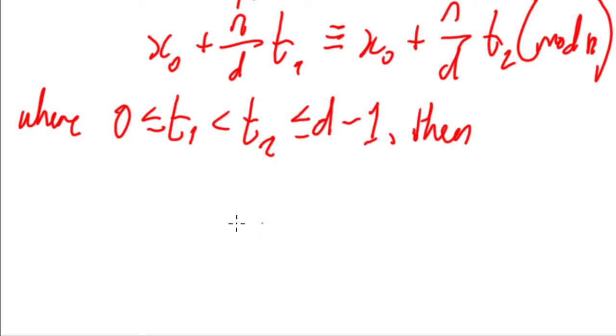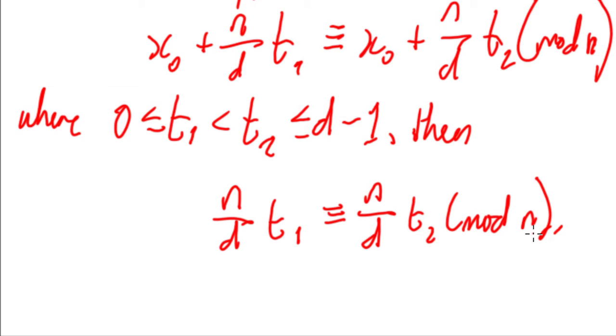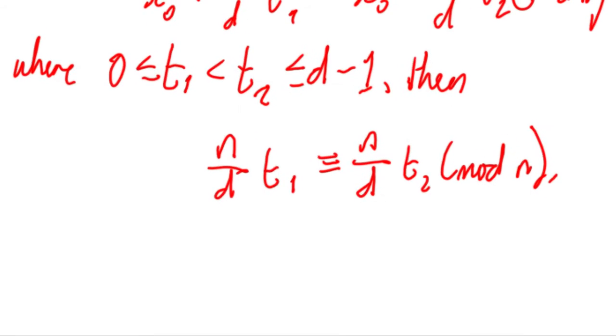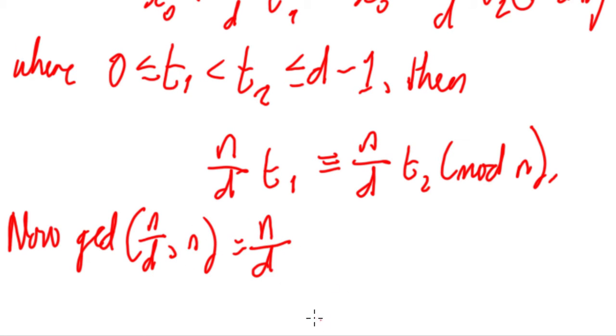Then we could say that n over d t sub 1 is congruent to n over d t sub 2 mod n. So we got rid of the x sub 0s from both of them. Now, the GCD of n over d and n is just equal to n over d of course.